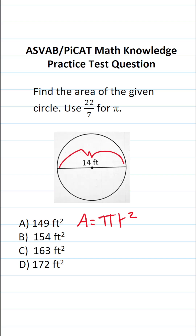Let's take a look at the circle that we're given. We know that the diameter of this circle is 14 feet. Diameter is defined as the distance from one edge of the circle to the other edge of the circle and through the center point. We need the radius in order to use the area formula, and the radius is the distance from the edge of the circle to the center point of the circle.